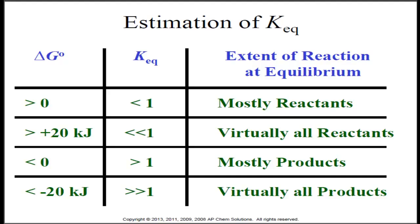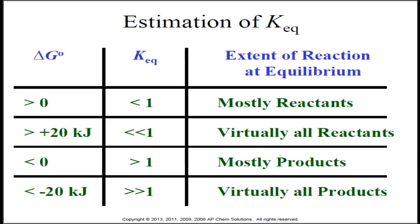This table summarizes estimating KEQ. If delta G is positive, the system will contain mostly reactants when it reaches equilibrium, and KEQ will be relatively small because KEQ equals products over reactants. If delta G is negative, the system will contain mostly products when it reaches equilibrium, and KEQ will be relatively large. The more negative the value for delta G, the further the equilibrium will lie to the right — so the delta G value can be used to determine the equilibrium position.